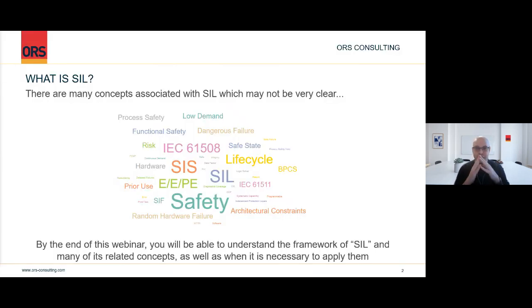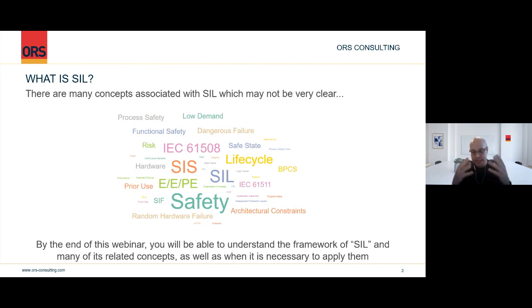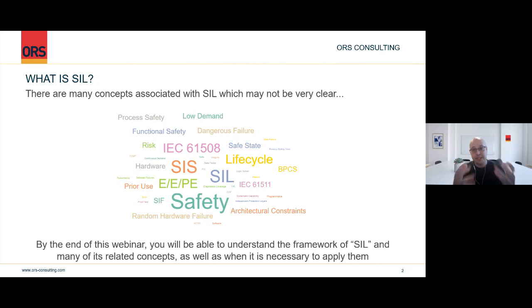I remember starting my functional safety journey years ago and thinking that functional safety is sometimes incredibly confusing. There are so many concepts, so many ideas related to SIL and functional safety. You have this jumble of concepts — safety, functional safety, process safety, architectural constraints, probability of failure on demand, MTTR, random hardware failure, systematic failures, dangerous failures. You have a world of concepts and ideas to explore when you start working with functional safety and with SIL.